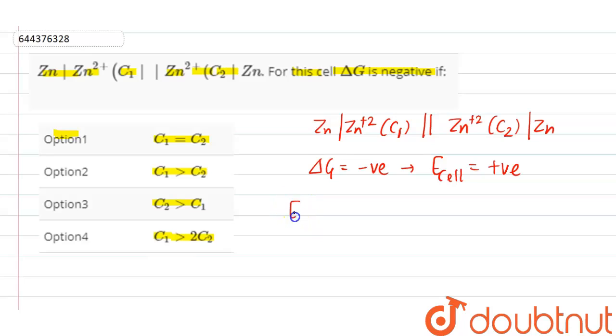And the formula of Nernst equation says that E cell is equals to E naught cell minus 0.059 by n log concentration of oxidation divided by concentration of reduction.